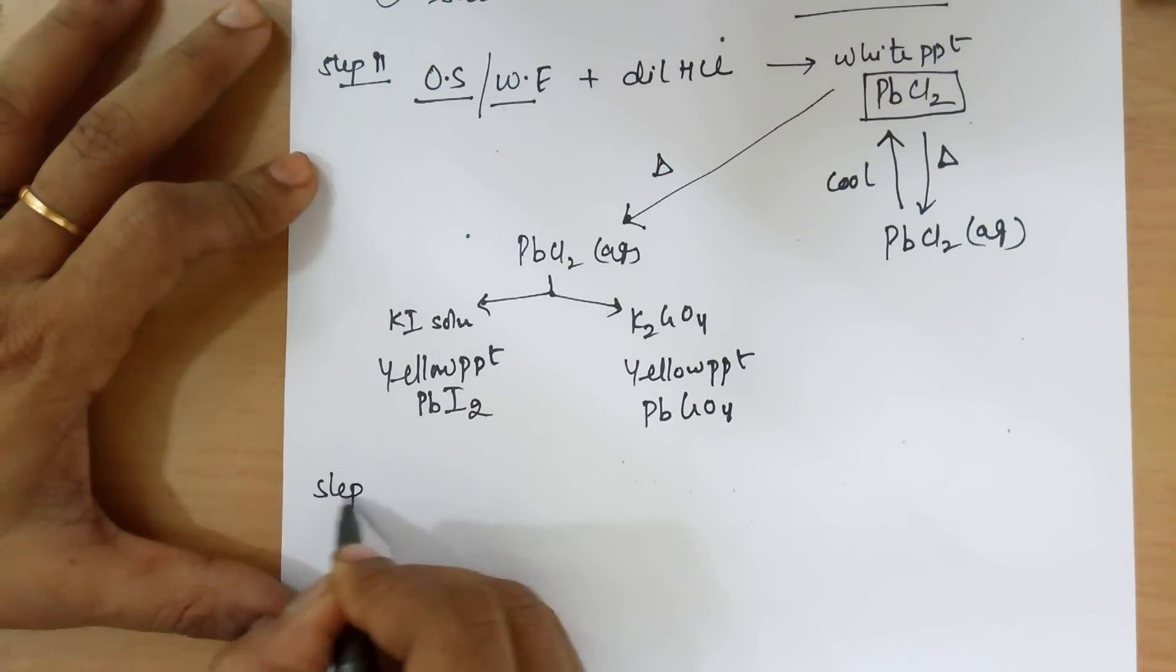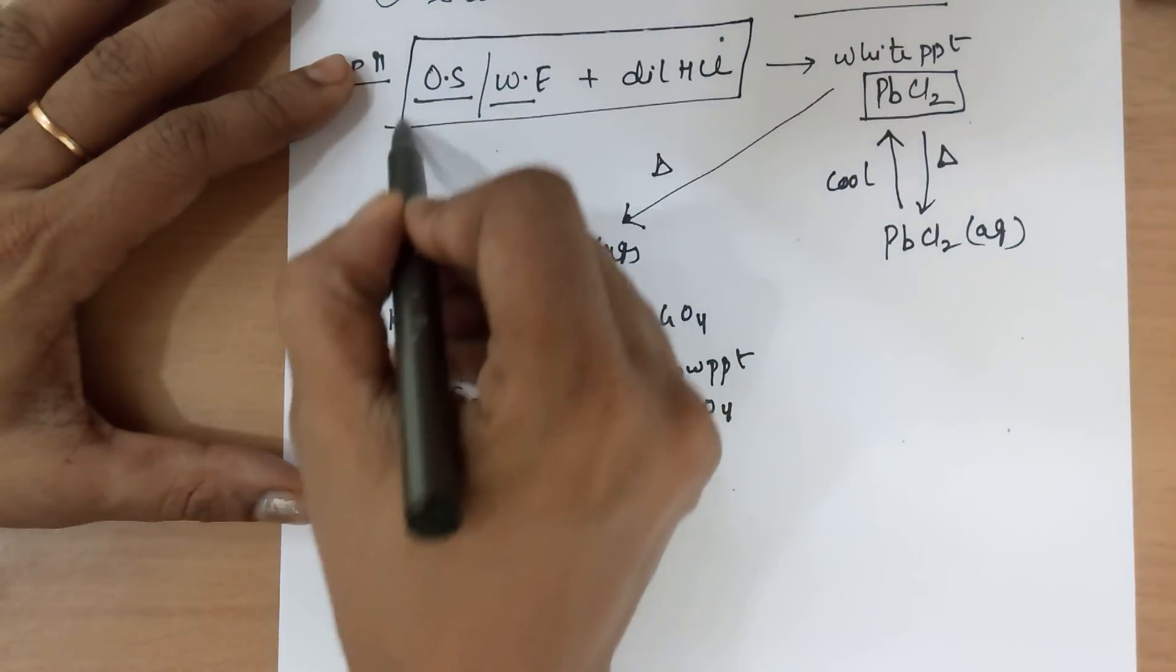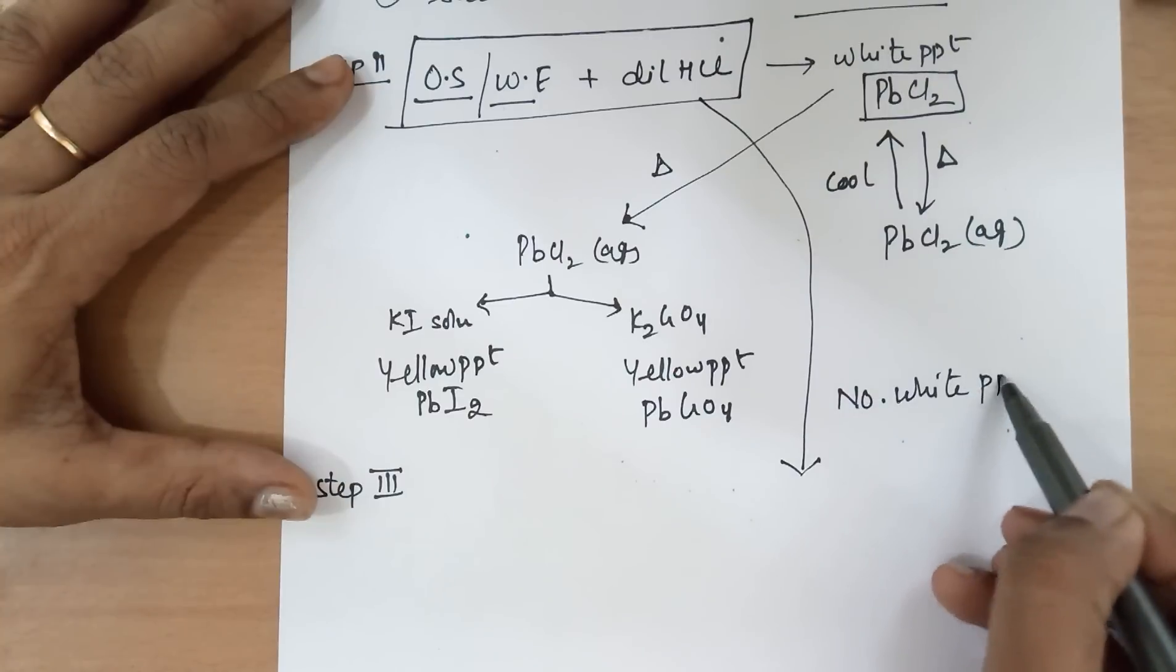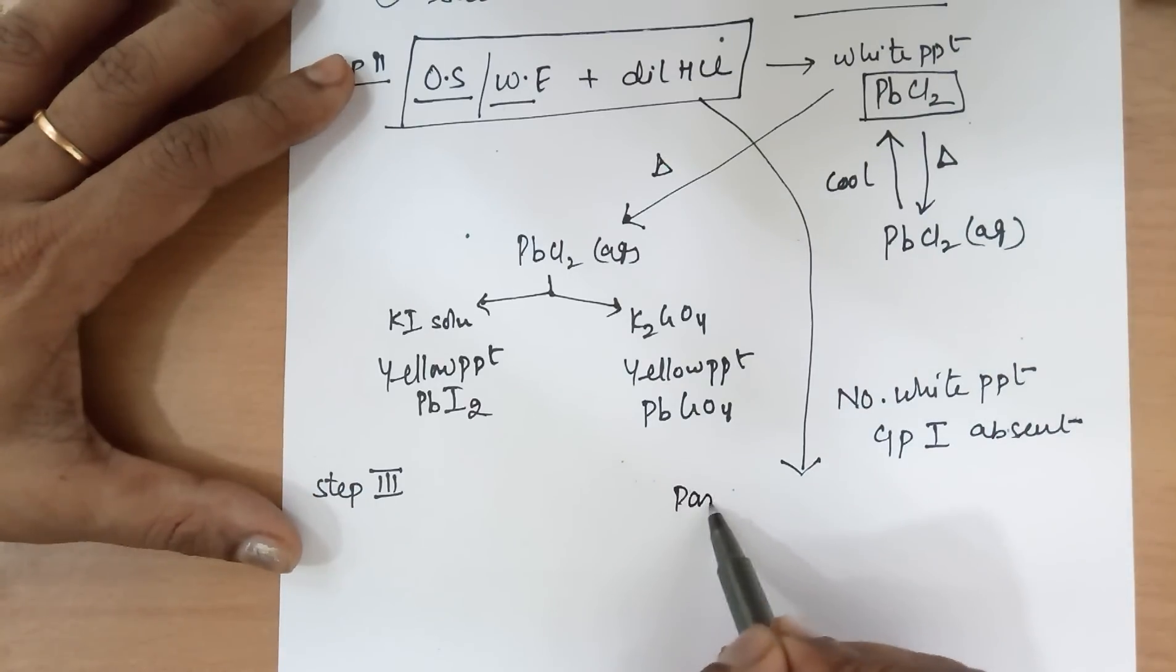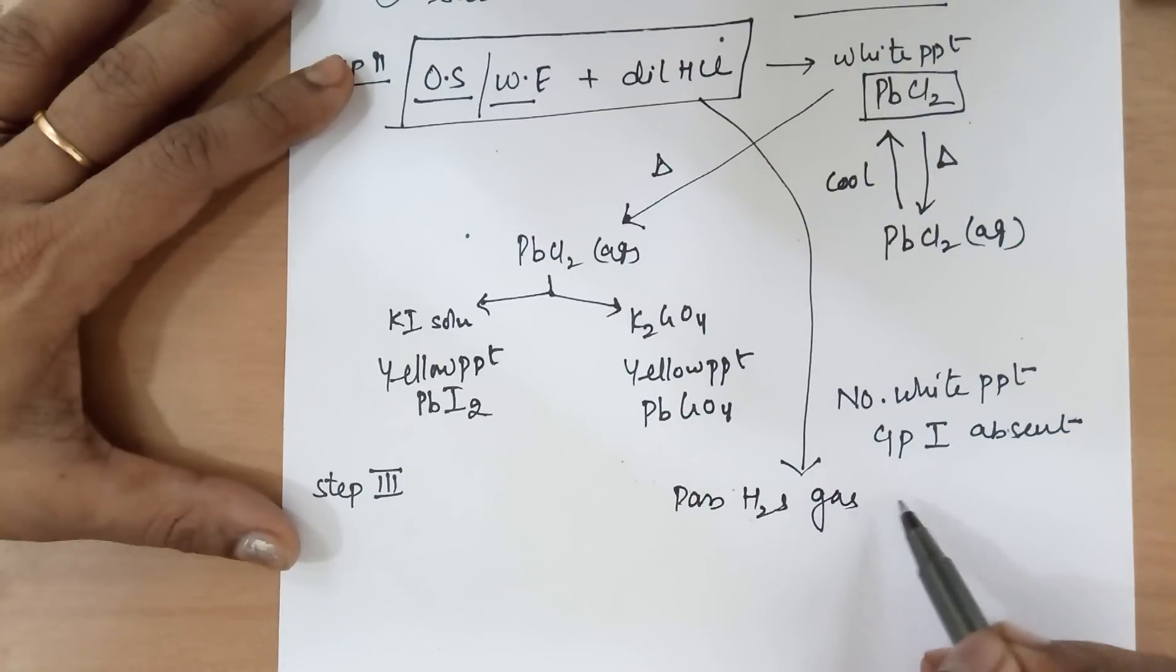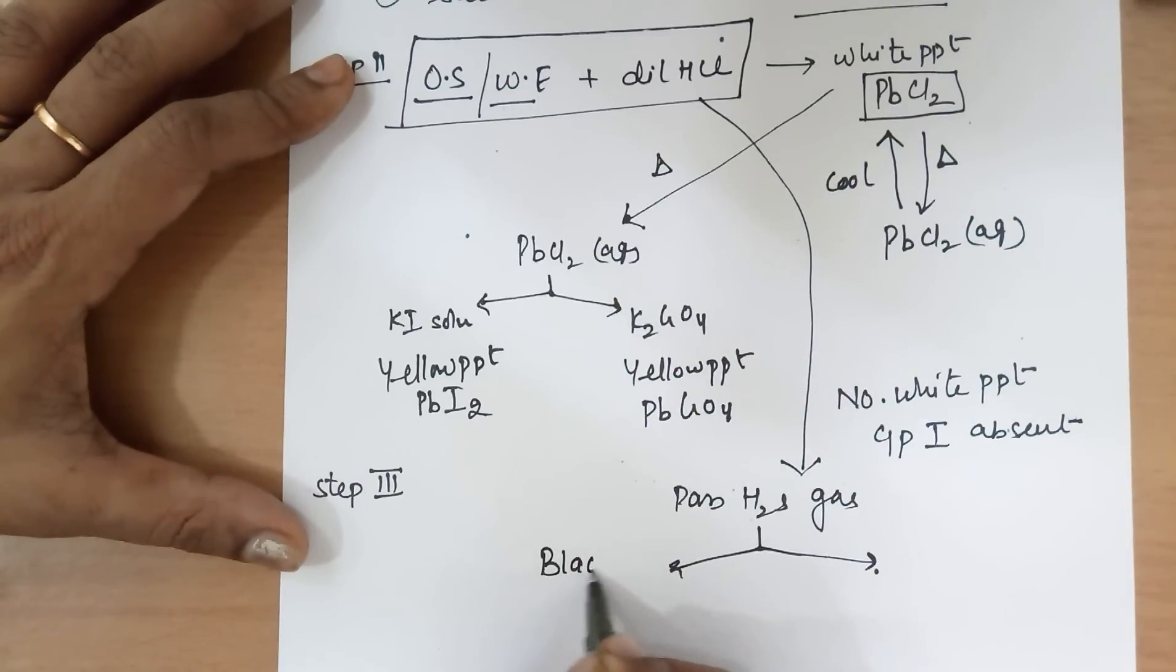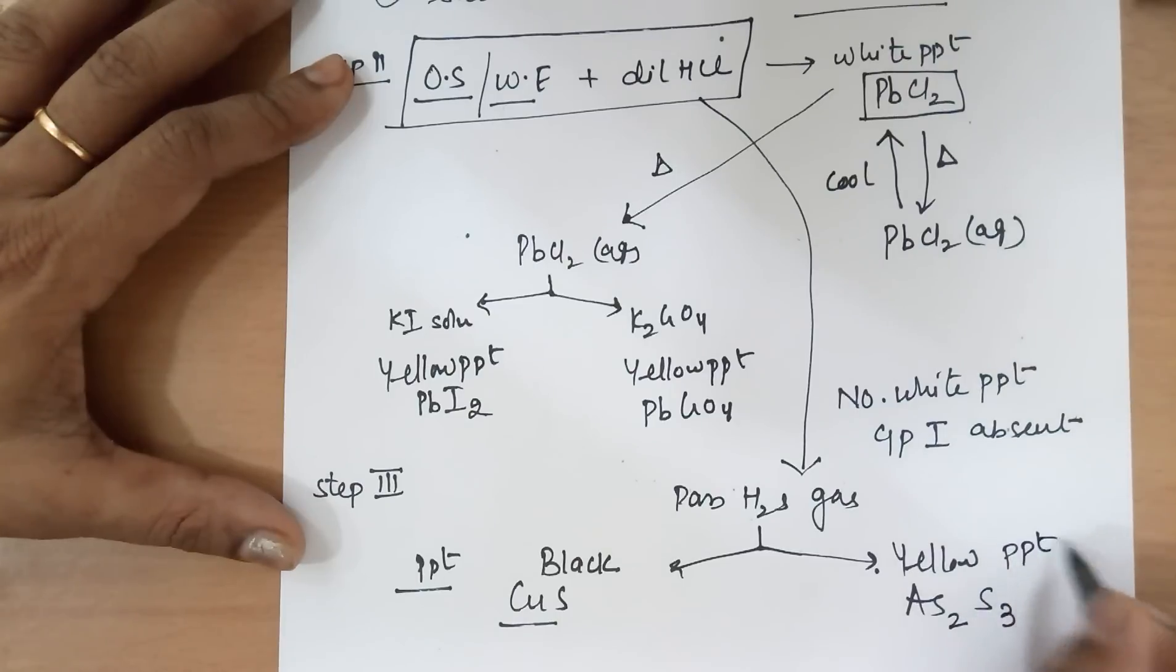Moving on to group 2. The third step. In case after adding dilute HCl to the OS, you get no white PPT, means group 1 absent. Now, what do you do? Pass H2S gas through the test tube. On passing H2S gas through the test tube, you have two options. One is, you may get a black PPT, which would be due to copper. Or you may get a yellow PPT, which would be due to arsenic. The valency of arsenic is 3. Sulfide is 2. So, the PPT's formula would be As2S3.